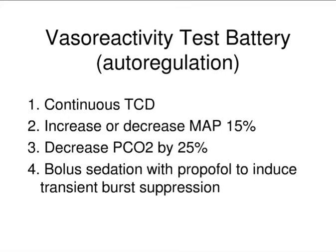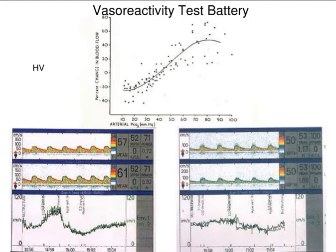You can use transcranial Doppler continuous monitoring — put the monitor on, change things in the physiology: change CO2, blood pressure, sedation — and watch the change in blood flow. This is probably the most profound thing you could do in the intensive care unit, especially in the comatose patient. If you start at a normal CO2 and hyperventilate the patient, blood flow velocity goes down; if CO2 goes up with hypoventilation, blood flow velocity goes up. You can quantify that dynamic change and determine whether somebody is autoregulating or not.